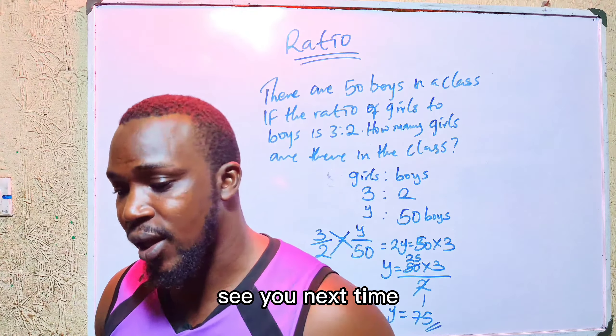Here is a question: there are 50 boys in a class. If the ratio of girls to boys is 3 is to 2, how many girls are there in the class? We are looking for the number of girls. They have given us 50 boys. Girls to boys is given as 3 is to 2, and we have 50 boys.